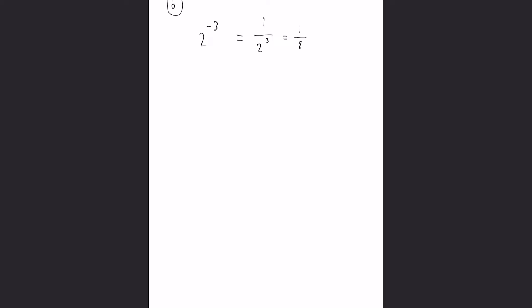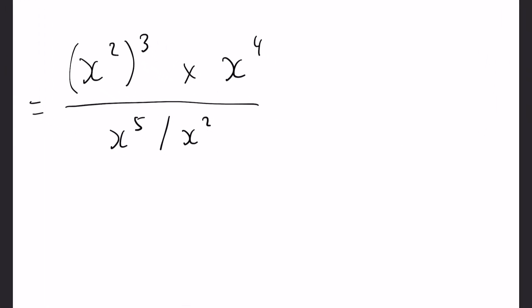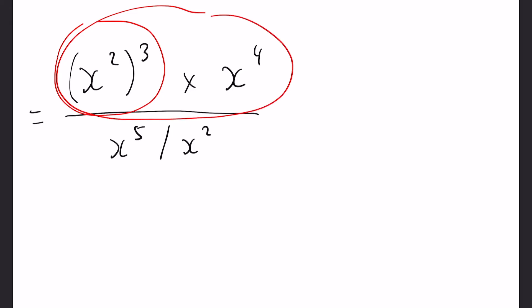Now that we know all those six rules, a very common especially in the higher papers, a very common question to get is where they combine a lot of the rules. Now at first this looks horrible, it looks very difficult, but you can quickly see if we break it down we have a rule here, we have a rule combined in the top, and then we have another rule in the denominator of the fraction.